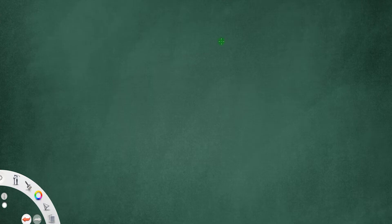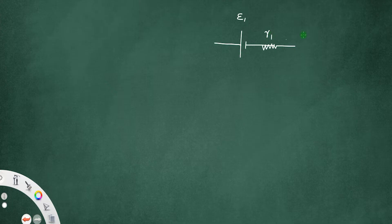Let us discuss the combination of two cells in series. Suppose we have two cells: cell 1 having EMF E1 and internal resistance R1, connected in series with another cell having EMF E2 and internal resistance R2.